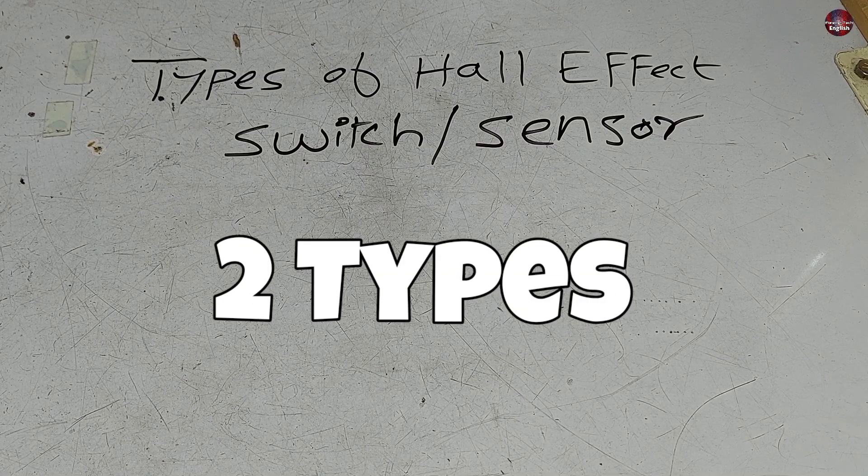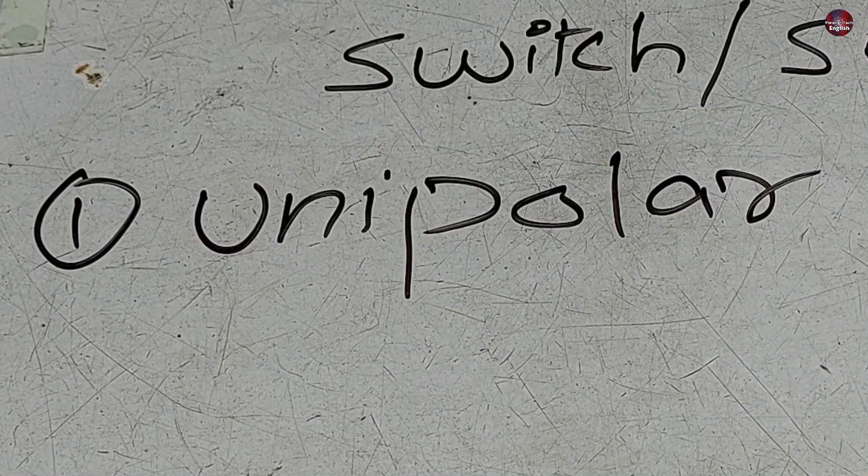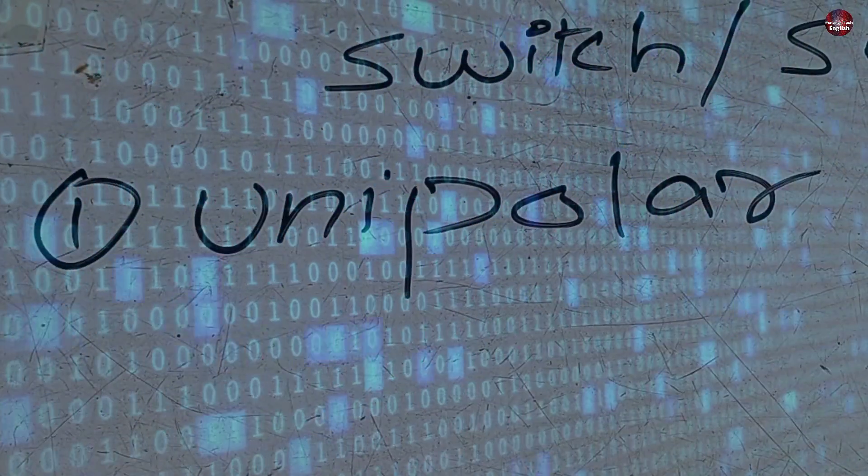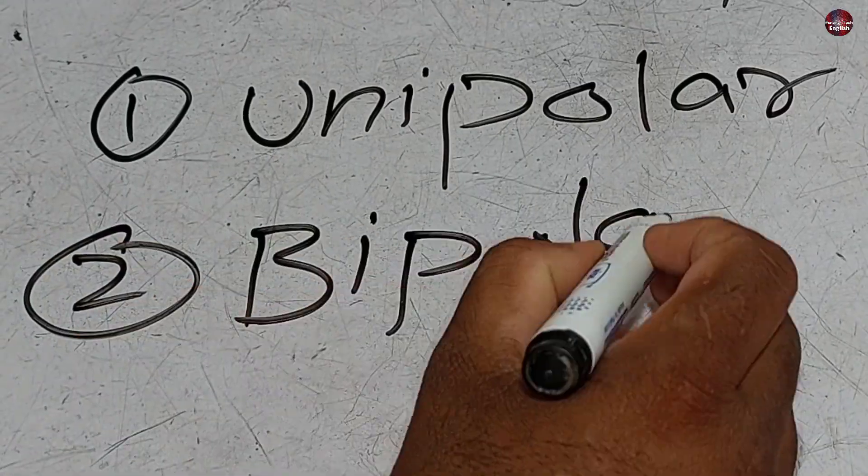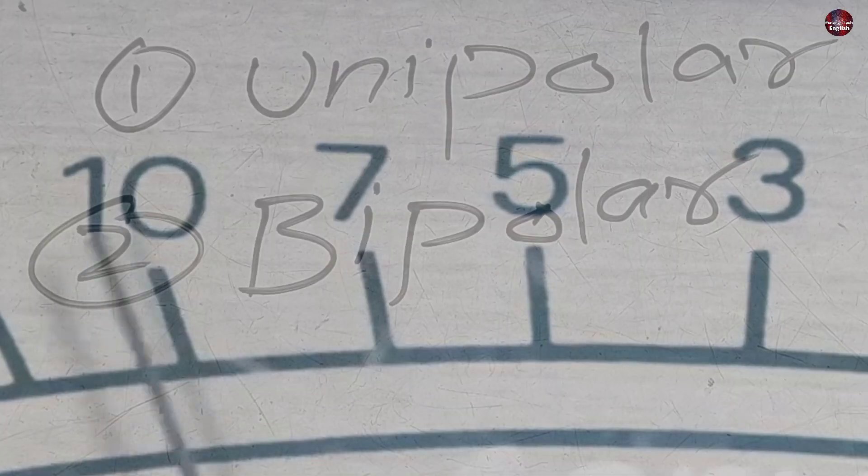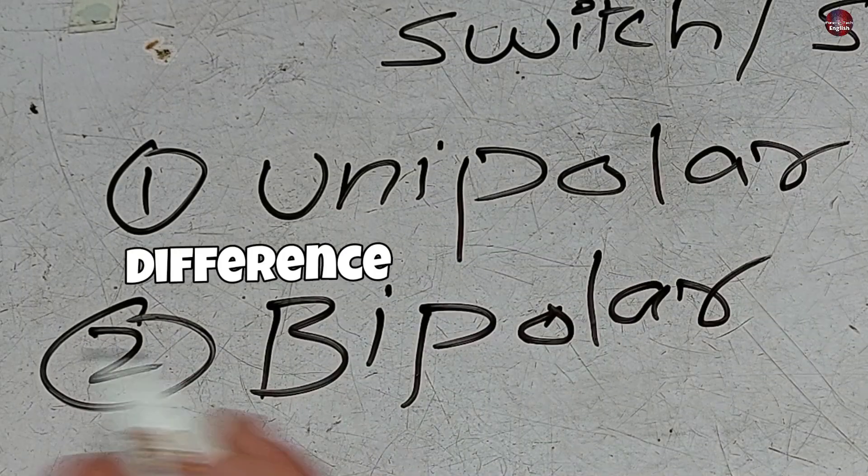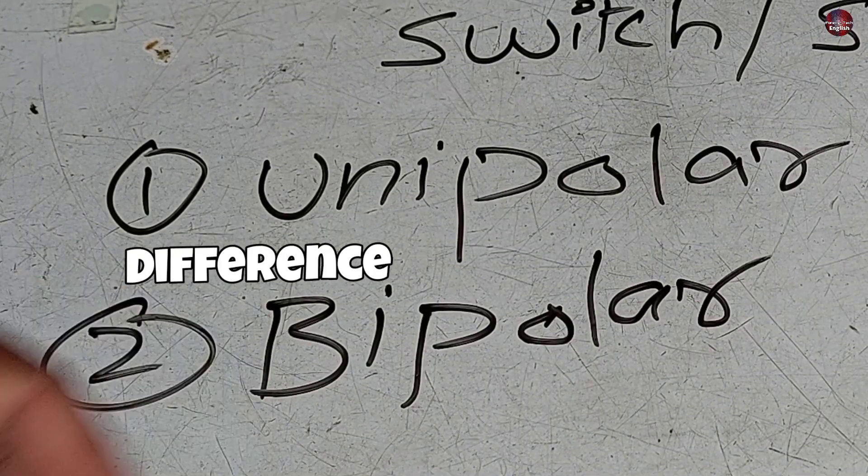So it has two types. The first is unipolar. Through this type of hall sensor, we can get digital signals. The second type is bipolar. This can be used to get analog or linear signals. Now there is a difference between the two of them. So now let's see what the difference is between them.